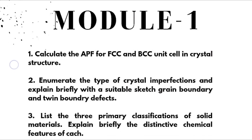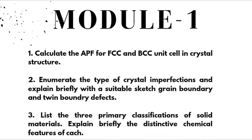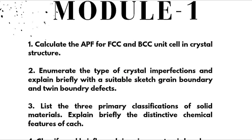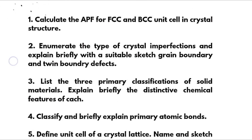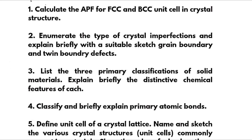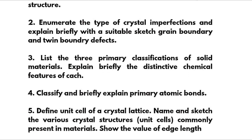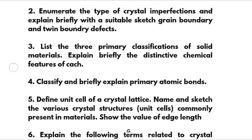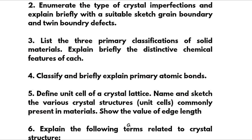Coming to Module 1: super important ones. First: calculate the atomic packing factor for FCC and BCC unit cells in crystal structure. Second: enumerate the types of crystal imperfections and explain briefly. Third: explain briefly with a suitable sketch grain boundary and twin boundary defects.